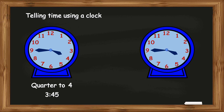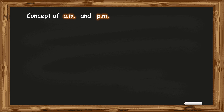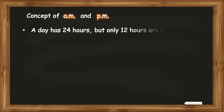After 3:45 or quarter to 4, when the minute hand reaches 12 once more, the hour hand is now at 4 and the time is 4 o'clock. Moving ahead with the topic, we will now learn the concept of AM and PM. We know that a day has 24 hours but only 12 hours are shown on the dial or the face of the clock.